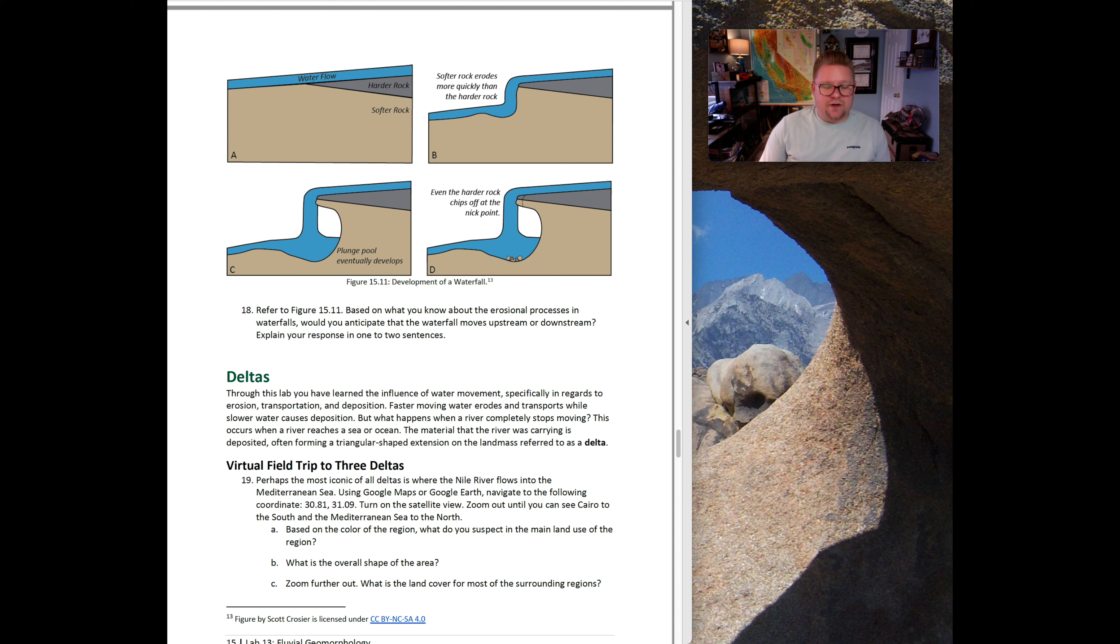The last part of C is to look at deltas, which is something we've talked about a little bit earlier without really saying the word. Through this lab, you've learned the influence of water movement, specifically in regards to erosion, transportation, and deposition. Faster-moving water erodes and transports, while slower water can cause deposition. But what happens when a river completely stops moving? That material gets deposited, the river itself will dump its load, and create this very unique teardrop shape, which is otherwise known as a delta, the triangular teardrop shape.